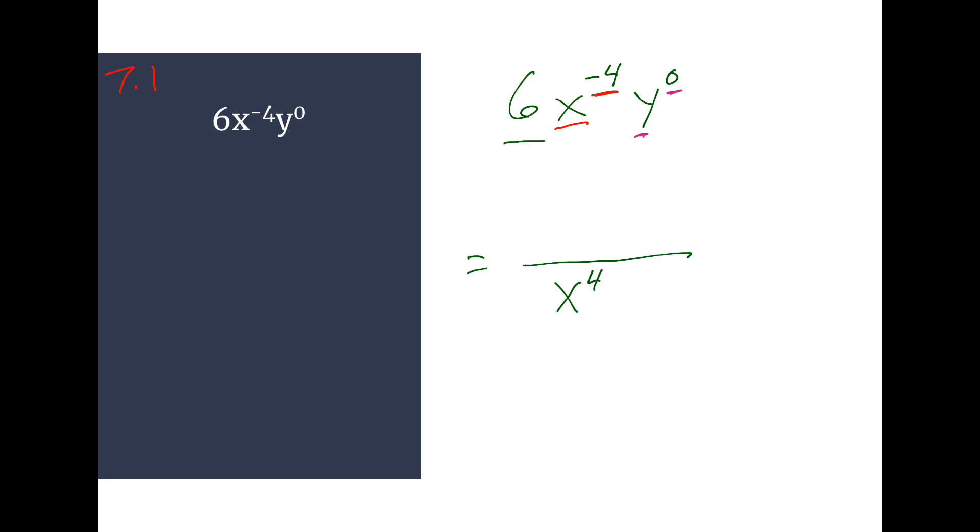So remember, any time we have a fraction, this is this over 1. So then we're going to flip it with a negative exponent. You're going to flip it down to the bottom half of the fraction. Or if it's already there, then you flip it up top. So x to the 4th.